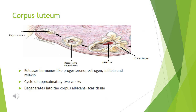The corpus luteum occurs after ovulation and releases hormones such as progesterone, oestrogen, inhibin, and relaxin over a cycle of approximately two weeks. It then degenerates into the corpus albicans, which is scar tissue.